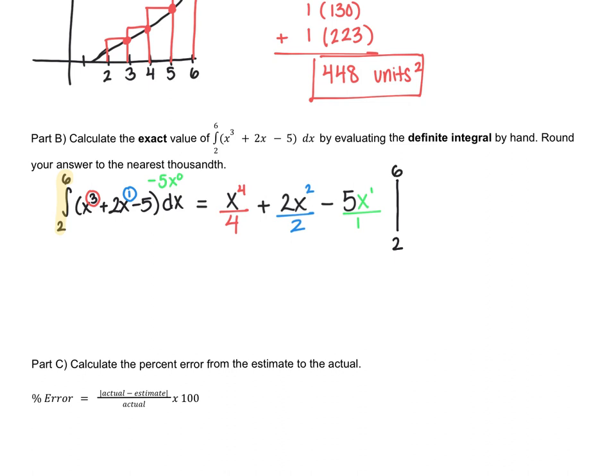So we're going to first simplify this before we plug in. So one other step. We have x to the 4th over 4. I can't simplify that. So we can leave that. I can cross off these 2s so I can make this x squared. I can simplify the 5 and the 1 and make that just negative 5. So minus 5x. And we're going to evaluate this from 2 to 6. So now that it's cleaned up, what we're going to do is plug in the top value and plug in the bottom value. So the formula now is just plug in the top and subtract once we plug in the bottom. So we're going to let the calculator do the work, but we have to write it on our paper first.